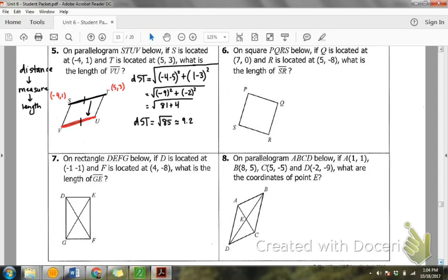So the distance of ST is the square root of 85. What is that as a decimal? 9 point what? 2.2. Now, is that what they asked me for, is the length of ST? What did they ask me for?